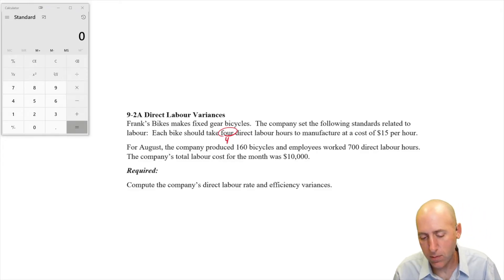For August, the company produced 160 bicycles and employees worked 700 hours. These are all actual things that happened. This stuff is all standards. The company's total labor cost for the month was $10,000. So that's the actual cost. And it asks us for the labor rate and efficiency variances.